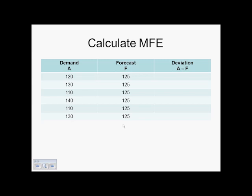On slide 19, we've actually done this math before. The actual deviation for our same six time periods — one through six — are negative five (120 minus 125), five (130 minus 125), negative 15 (110 minus 125), positive 15 (140 minus 125), negative 15 (110 minus 125), and five (130 minus 125).